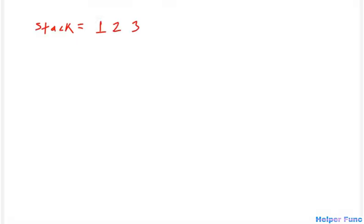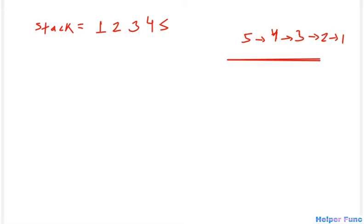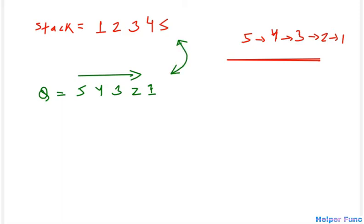Let's say I have a stack with elements one, two, three, four, and five. If I need to pop elements from this stack the order will be five, four, three, two, and one. So what we have to do is make a stack using a queue. To achieve the same pop sequence in a queue, the queue should look like five, four, three, two, one. So the elements in the queue should be the reverse of the elements in the stack.